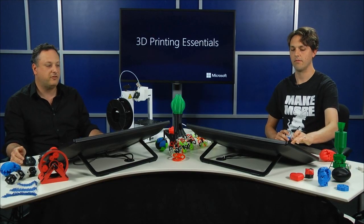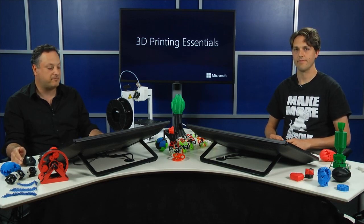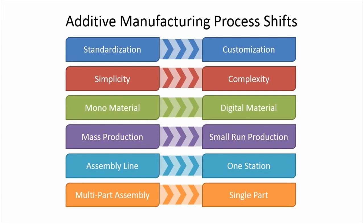We're going to get into a lot more detail about support material and designs later. But let's talk more generally about 3D printing and where we see opportunities. Here's the additive manufacturing process — it's really different. What we're showing on the left is how manufacturing traditionally has been: injection molding, machining parts. The basic idea is that in order to make it cost effective, you have to make a lot of something — thousands or hundreds of thousands. That standardization is really important. Whereas in 3D printing, with additive manufacturing, making one of something is the same price as making 10,000 per object.